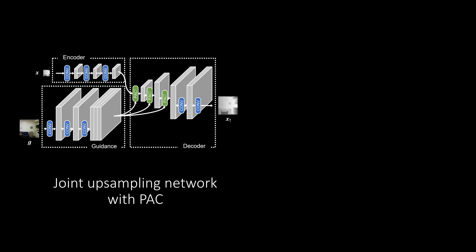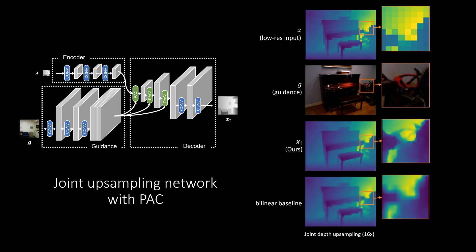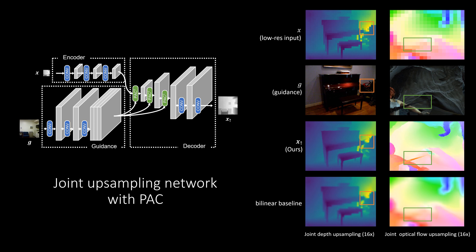PAC is flexible and we expect great potential in applications. As a first use case, we demonstrate the use of the transposed convolution variant of PAC for joint upsampling. For depth upsampling, our network can successfully recover details not visible in the low-res signal. Similar results can also be obtained in optical flow upsampling.